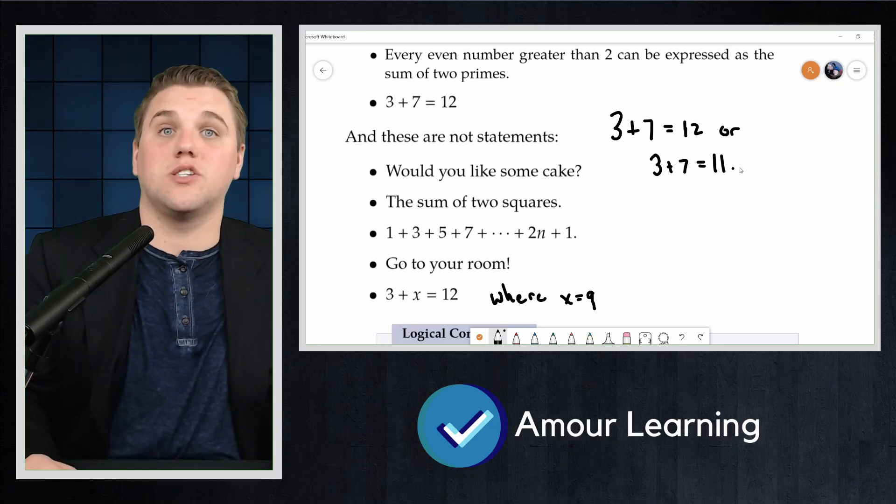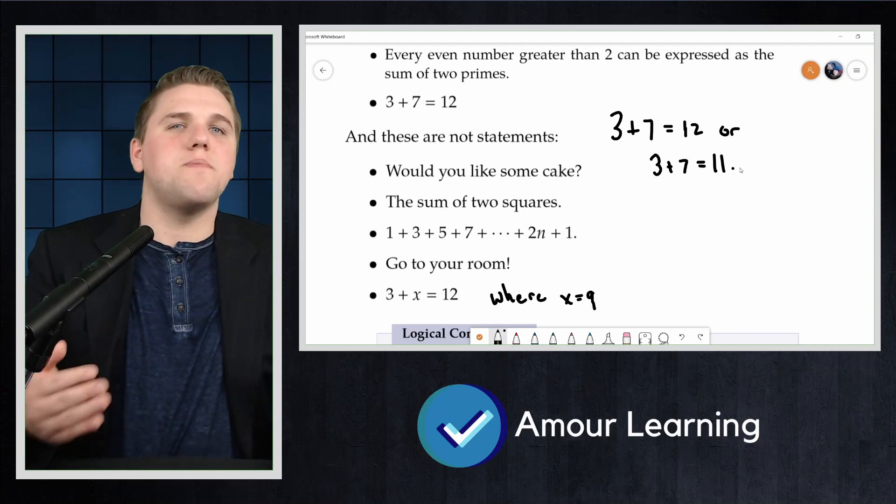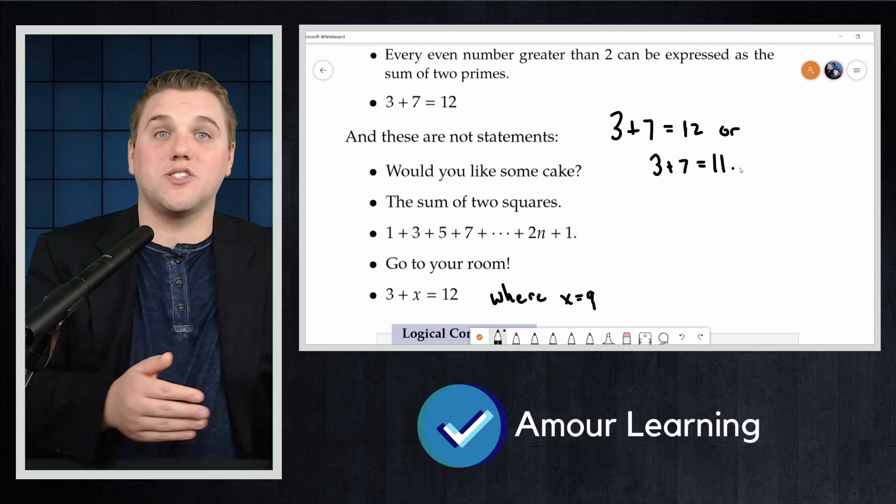These molecular statements are of course still statements, so they must either be true or false. The absolute key observation here is that which truth value the molecular statement achieves is completely determined by the type of connective, logical connectives, and the truth values of the atomic parts. We do not need to know what the parts actually say, only whether those parts are true or false in order to determine the overall molecular statement as true or false.